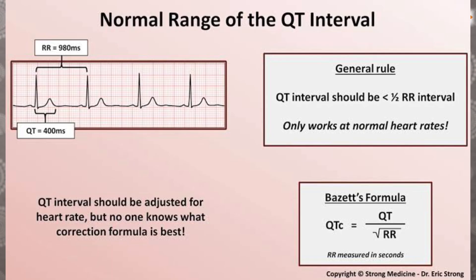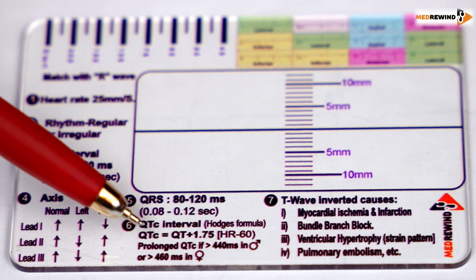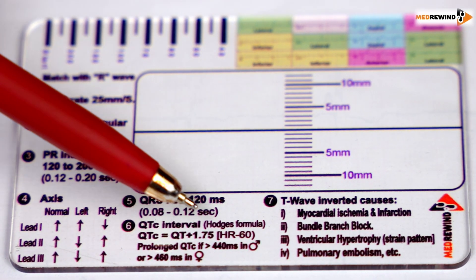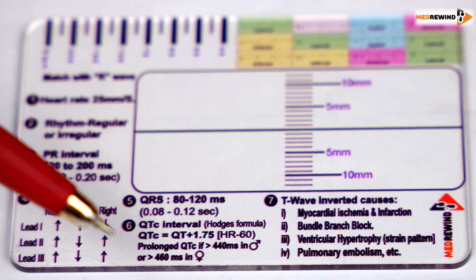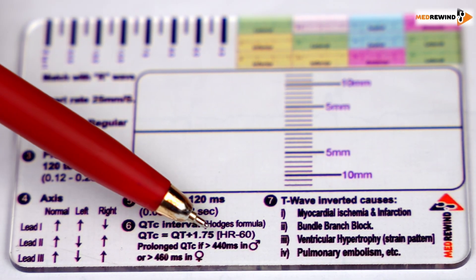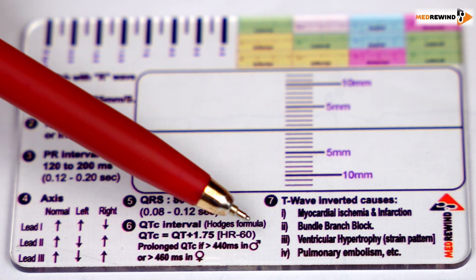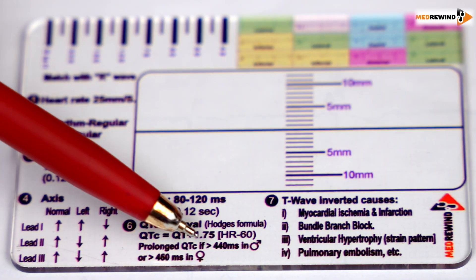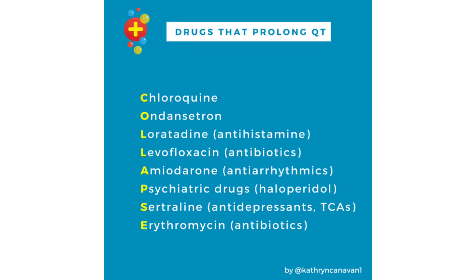Step 6 is QTc interval calculation. This step is very important and there are different formulas such as Bazett's formula or Hodges formula. We are using Hodges formula for ease of calculation. Hodges formula is: QT plus 1.75 into (heart rate minus 60). If it is prolonged, it is more than 440 milliseconds in males and more than 460 milliseconds in females.